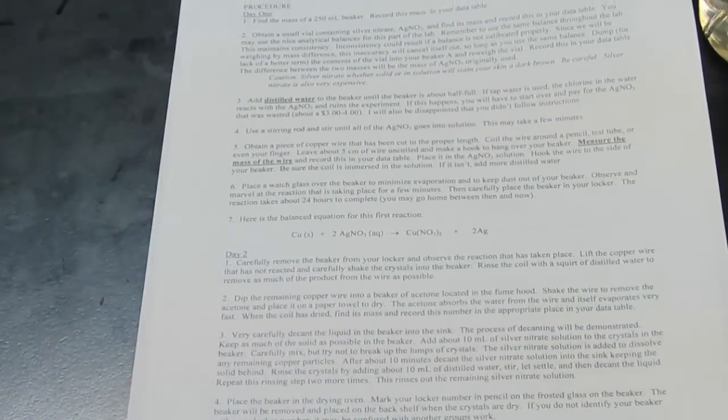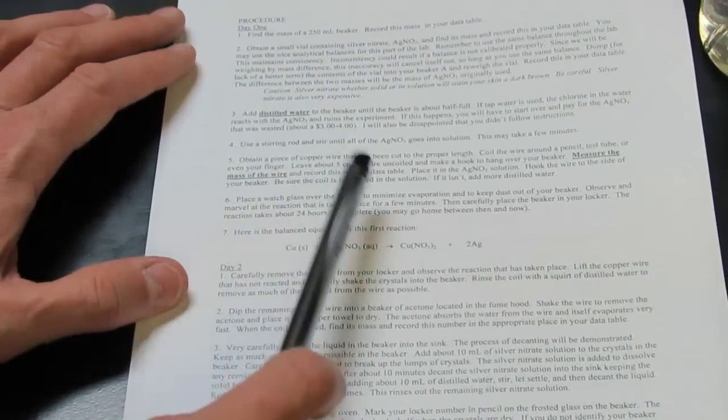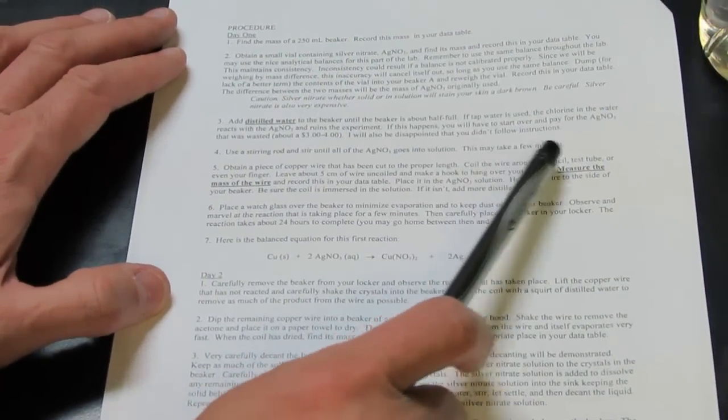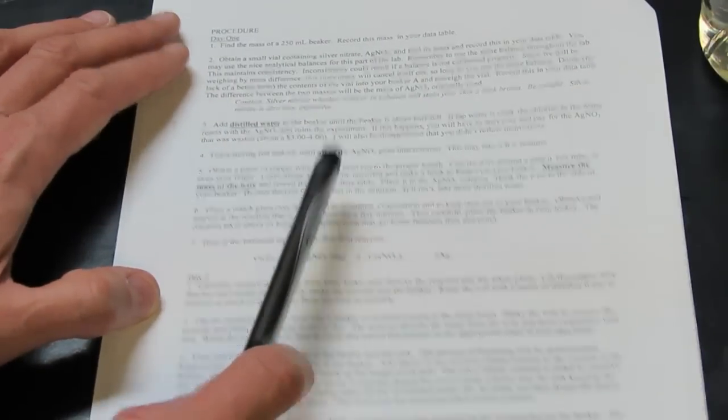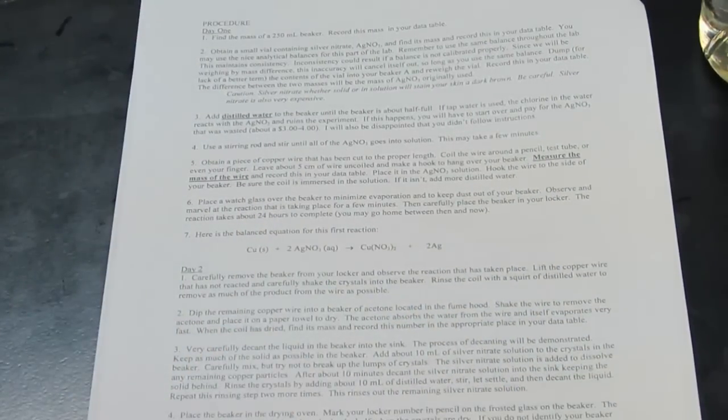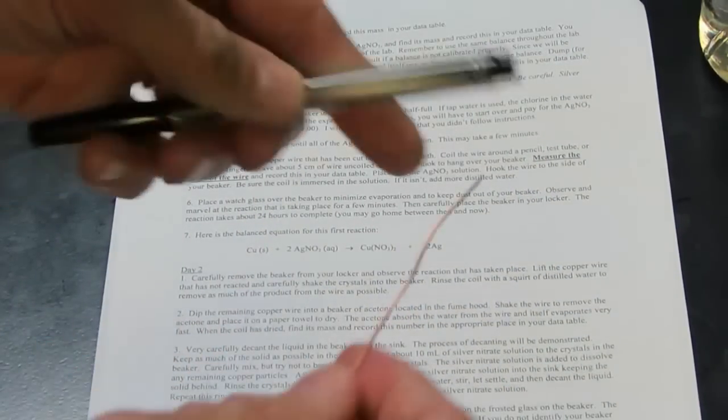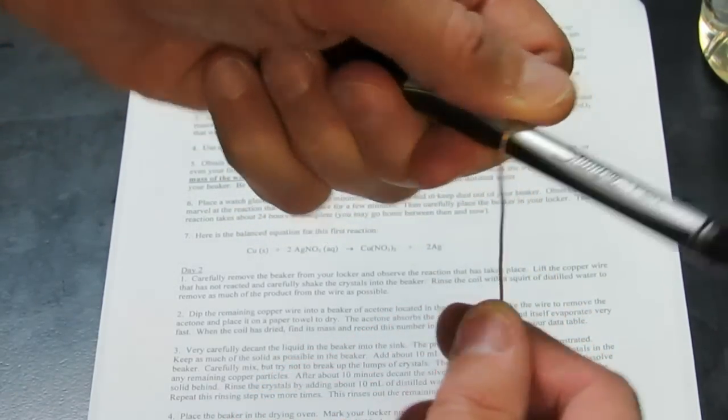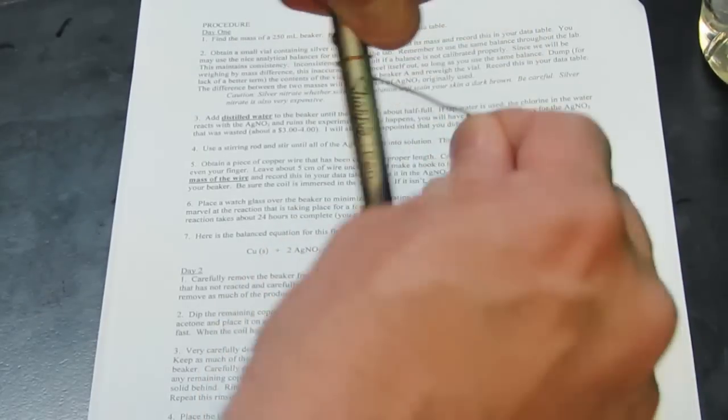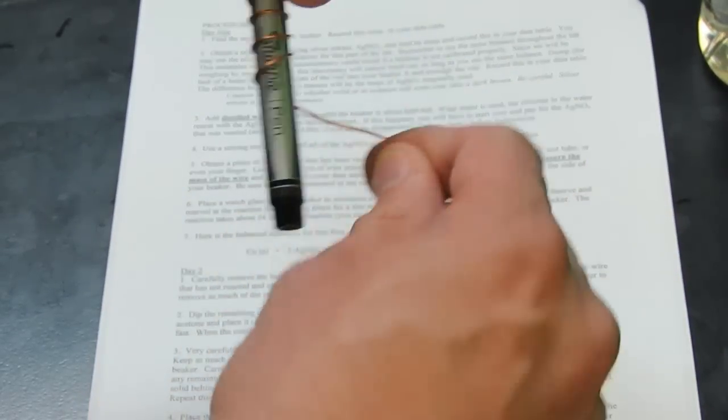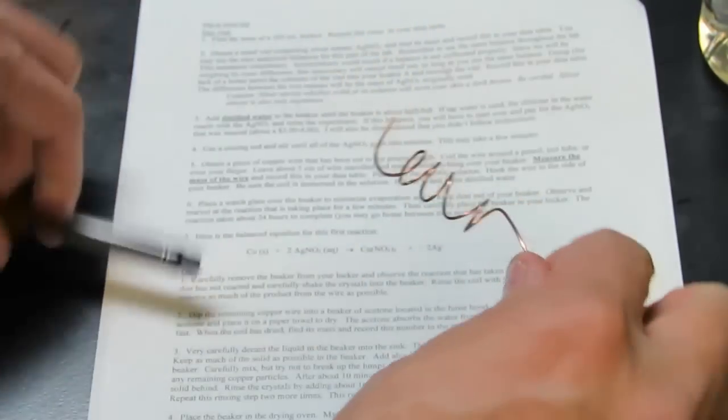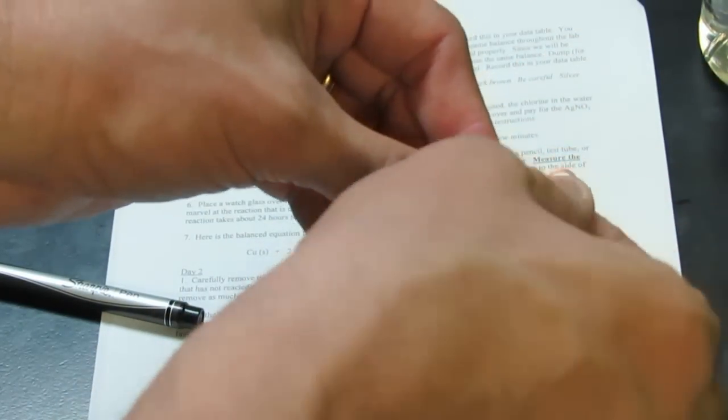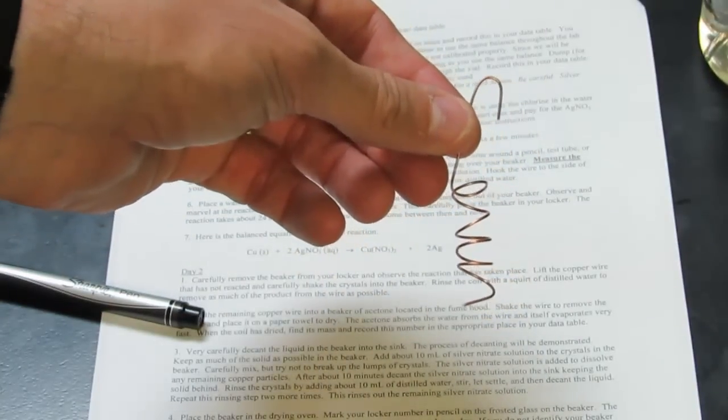Back to our instructions. Coil the wire around a pencil, test tube, or even your finger and leave about five centimeters of the wire uncoiled and make a hook. I'm going to hold the copper wire on my pen with my thumb, and I'm just going to wind it around my pen. We'll leave a bit that's not wound, and then we're going to make a little hook at the tip right there. So your wire should look something like that.